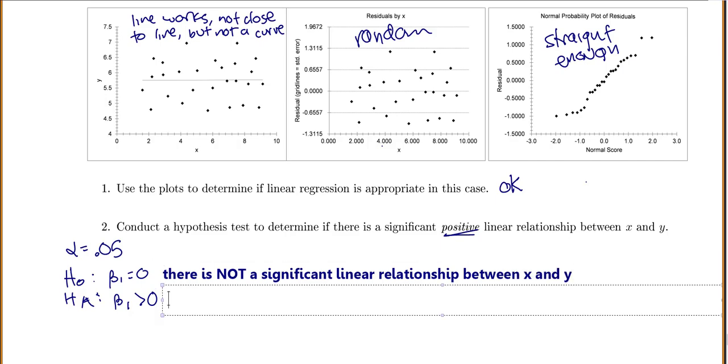The alternative, if my population slope is greater than 0, that would mean there is a significant linear relationship between x and y. Not just that. We checked if my slope is greater than 0, so that would mean there's a significant positive linear relationship.